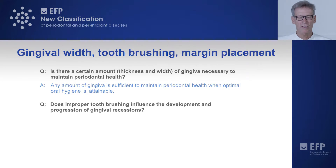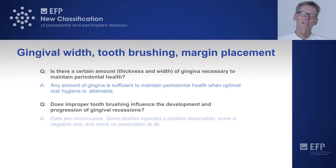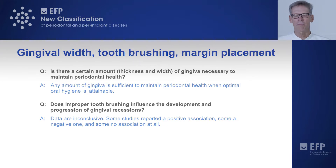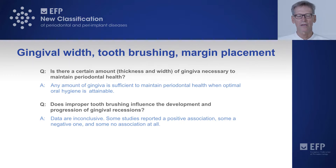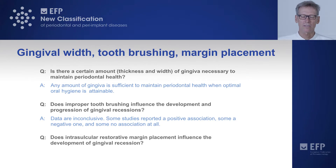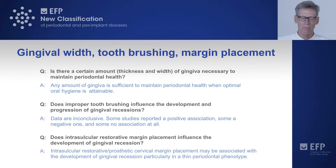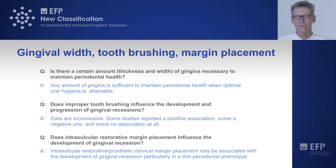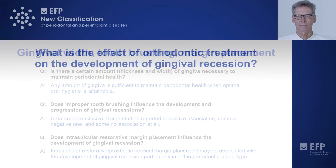Does improper toothbrushing influence the development and progression of gingival recessions? The data and evidence are inconclusive — some studies report a positive association, some a negative one, and some no association at all. Regarding intracrevicular restorative margin placement, the answer is that such margin placement may be associated with the development of gingival recession, particularly in a thin periodontal phenotype.